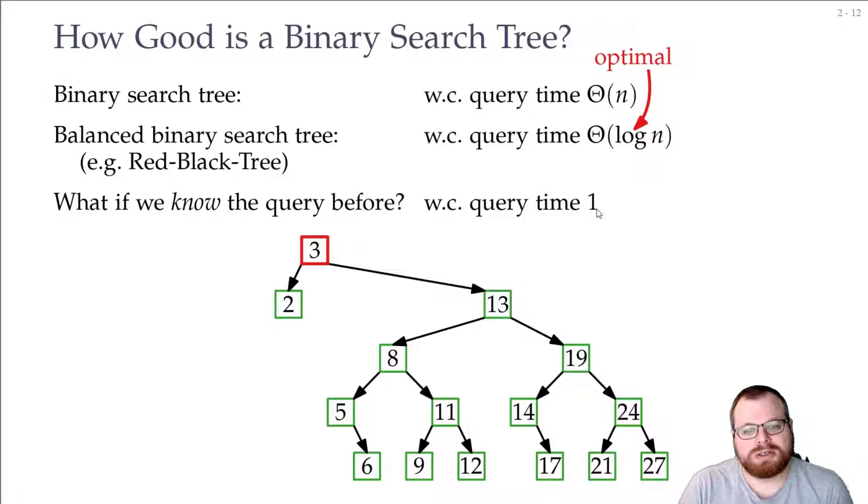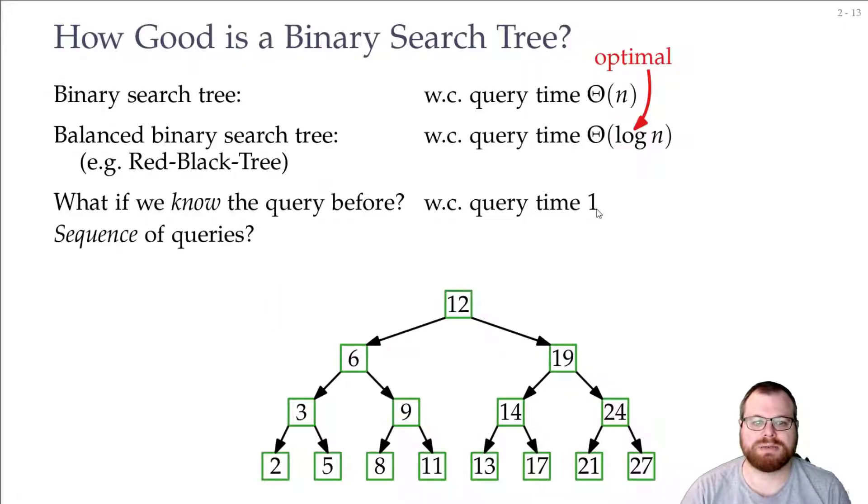But usually you don't use a tree to only look for a single number, but you will look for several numbers. So we'll have a sequence of queries. For example, first you might want to look for the 2, then for the 13, and then for the 5.